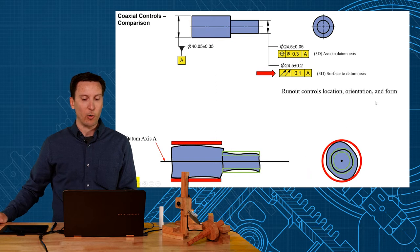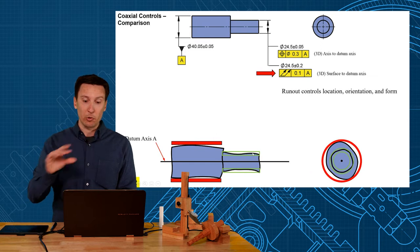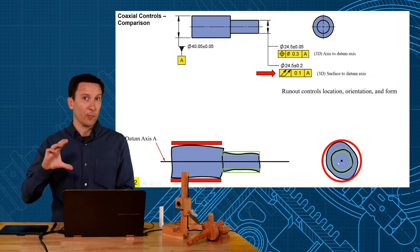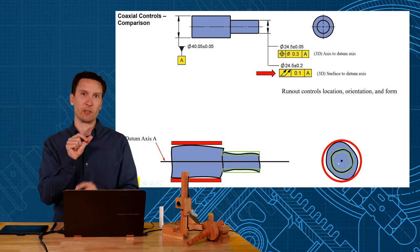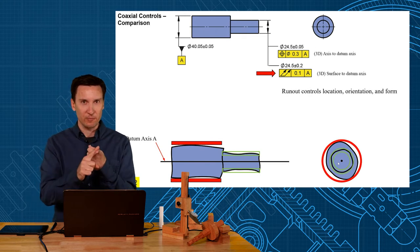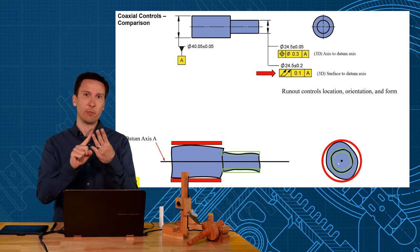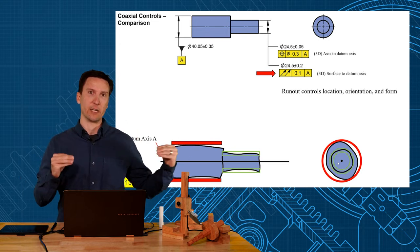And notice how it also controls form. If that surface were wavy, tapered, or in this other view oval, that would be controlled by the run-out tolerance as well. So run-out controls location, orientation, and form, all relative to that datum axis.